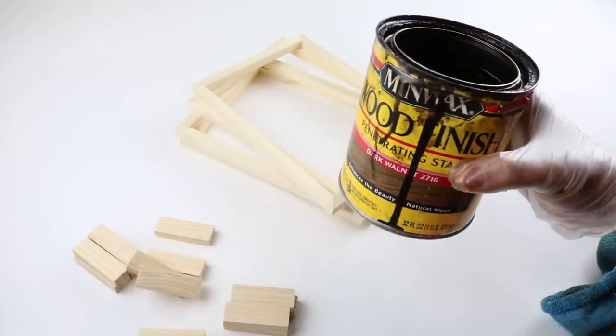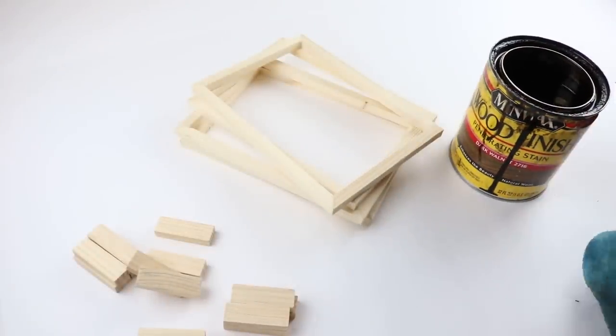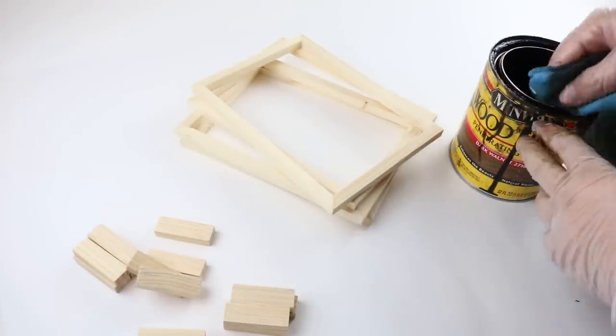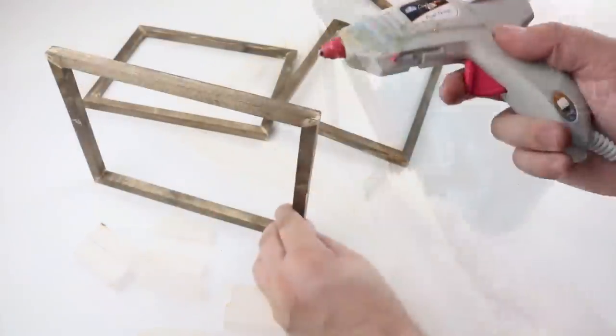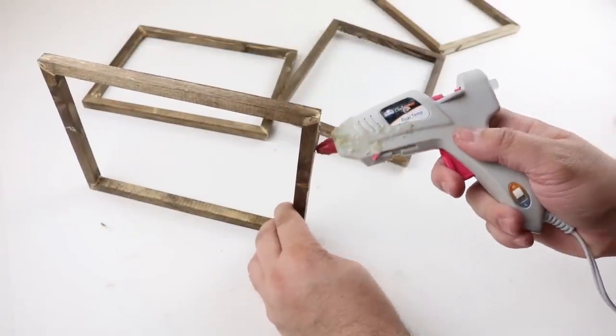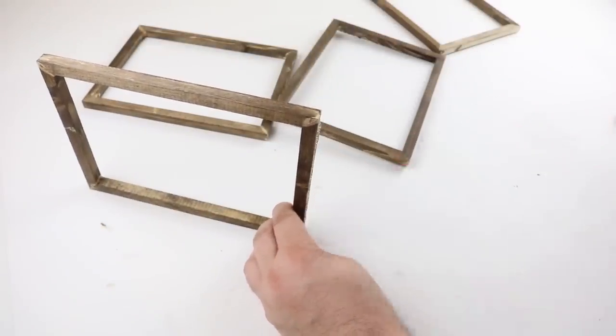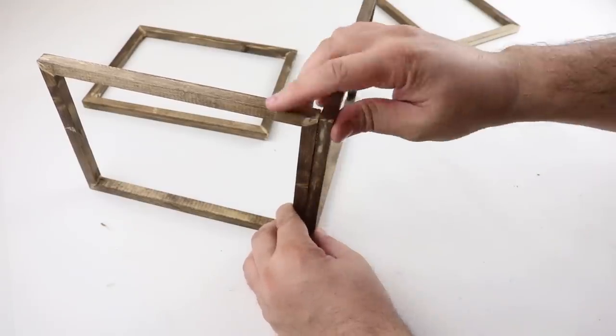The next part, we'll want to go ahead and stain all of the blocks and canvas frames. Our favorite stain that we've been using is this dark walnut from Minwax, and we'll have a link for that in the description below. Once they're all stained, we can start gluing them together.